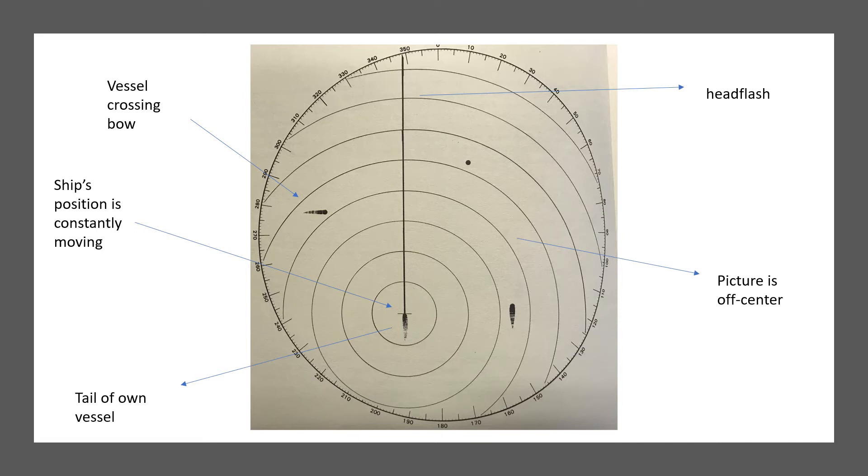Target speed is estimated by comparing the length of the observed tail to the tail left by your ship. On your starboard bow is a vessel—not on the same course, rather, it is showing no tail. That contact is not moving; it is stationary or dead in the water. On the starboard beam is a vessel on the same course and speed as yours.